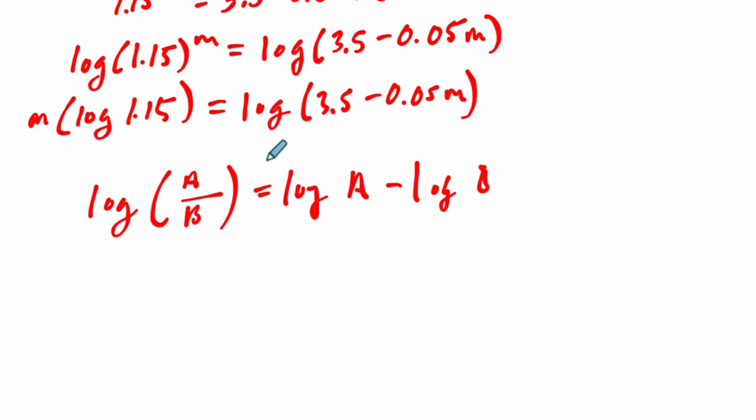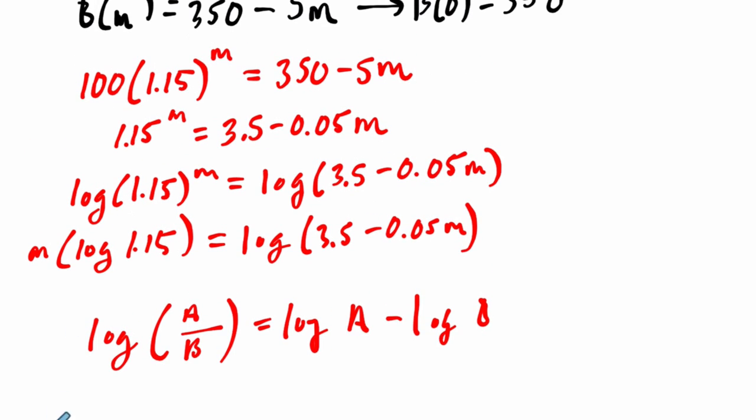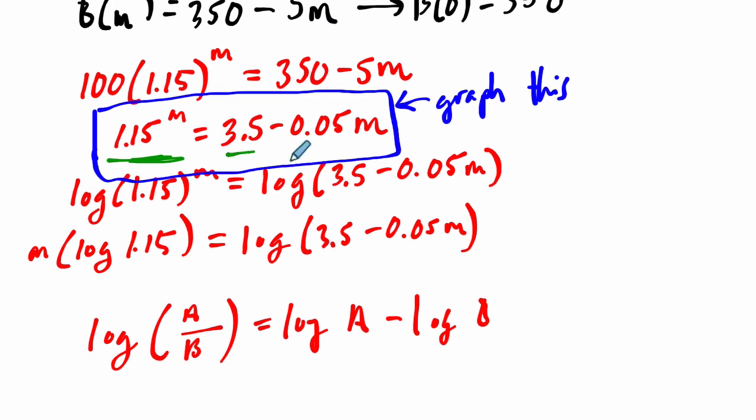And that's okay. What I like about this problem and you working on this problem is to recognize that there are situations where it just makes sense to solve it graphically. In other words, with a problem like this, the algebra gets us stuck. But graphing it can help us solve it. Graph 1.15 to the m power and graph 3.5 minus 0.05 m and see where they meet.